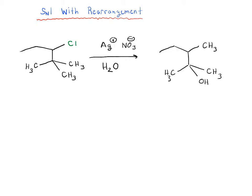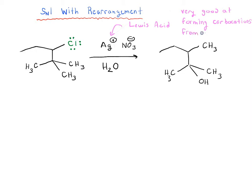This is an example of an SN1 reaction that occurs with rearrangement. The first thing that might throw students for a loop is the silver, Ag. What does it do? Silver plus is a Lewis acid, and it's very good at forming carbocations from alkyl halides. So if you see silver plus in a reaction with an alkyl halide, it's going to be helping to remove the chloride so that you form a carbocation — that's the clue.